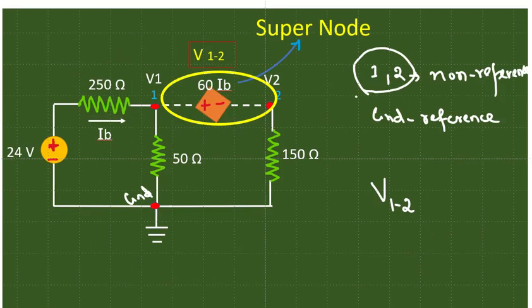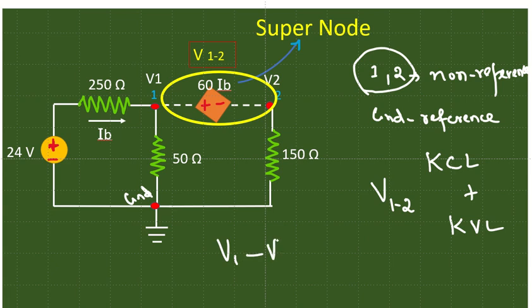One more thing we should know: if you have the super node, we are going to apply KCL as well as we have to apply the KVL. KVL is the voltage difference in a closed loop, but here what we have to do is this voltage source, dependent voltage source, can be written as V1 minus V2 equals 60Ib. This would be our second equation.